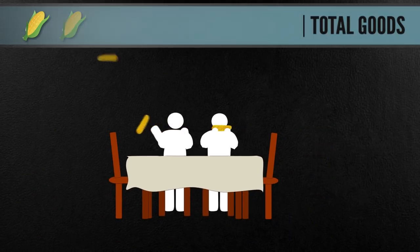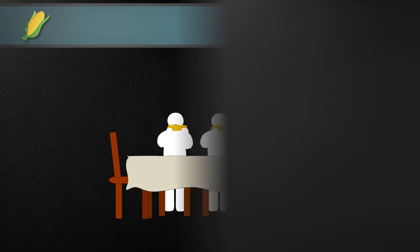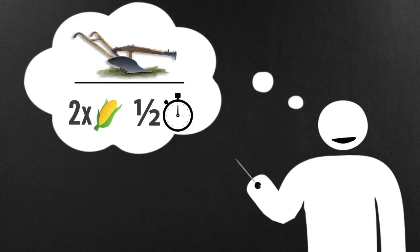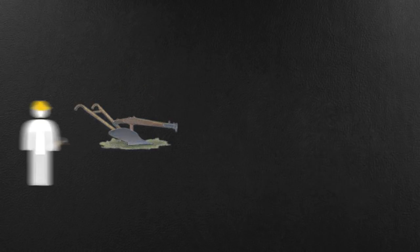But if they want to sustain themselves, their production must outpace their consumption. What if they decide to build a plow to help increase their productivity? With a plow, they could produce twice as much in half the time. Well, plows don't just pop out of thin air.